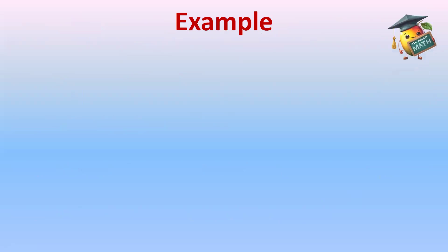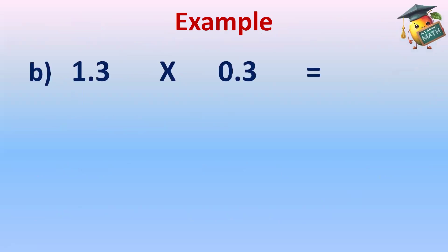For example, 1.3 multiply 0.3. So first step: remove the decimal. This becomes 13 multiply 3. 13 threes are 39.